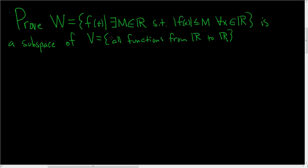So we have a set W. This consists of all the functions that are bounded. So what does it mean for a function to be bounded? It means that there is a number M such that the absolute value of the function is less than or equal to M for all x in R.